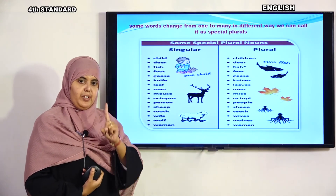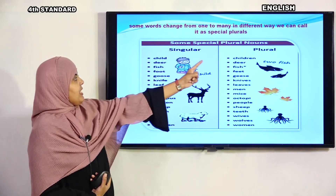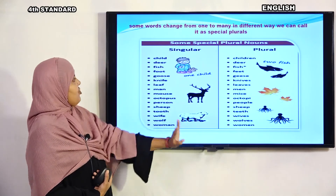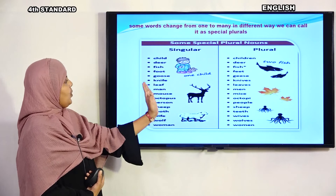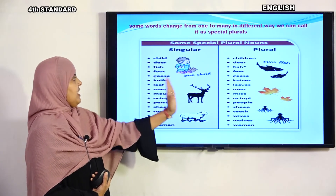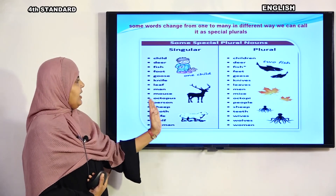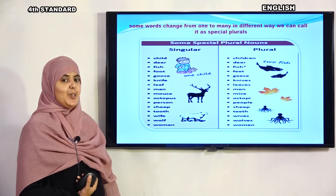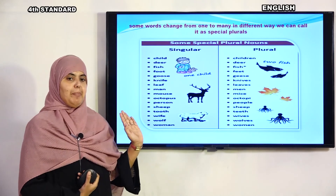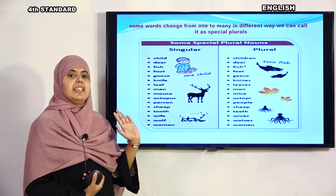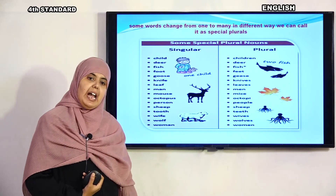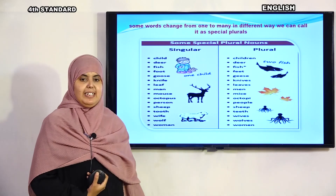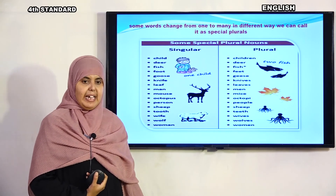Shall I repeat one more time? Child — children, deer — deer, fish — fish, foot — feet, goose — geese, knife — knives, leaf — leaves, man — men, mouse — mice, octopus — octopi, person — people, sheep — sheep, tooth — teeth, wife — wives, wolf — wolves, woman — women.